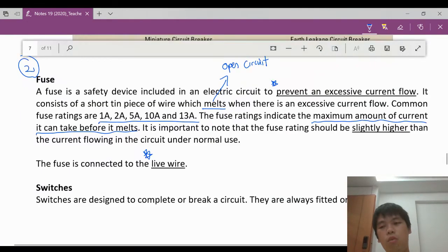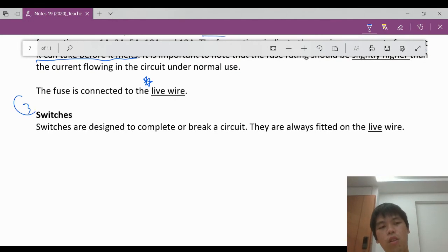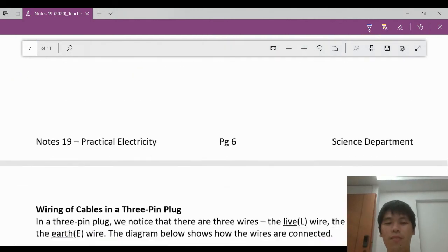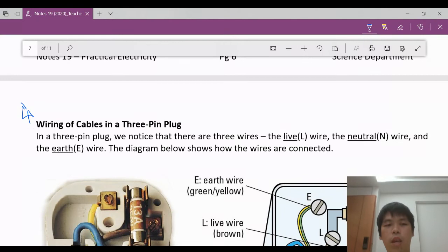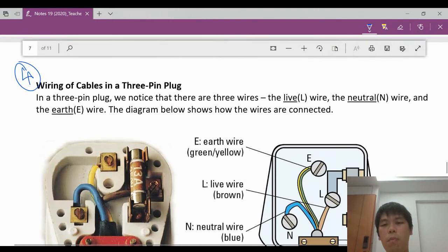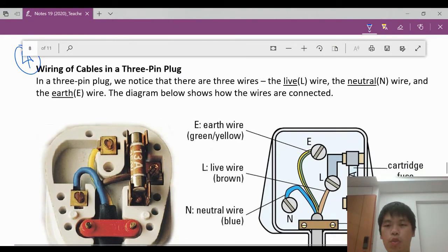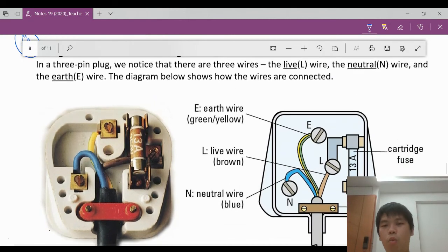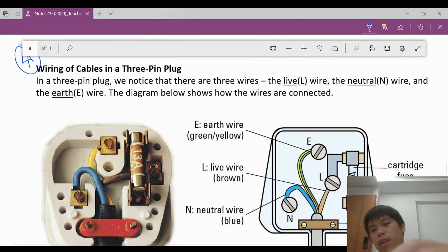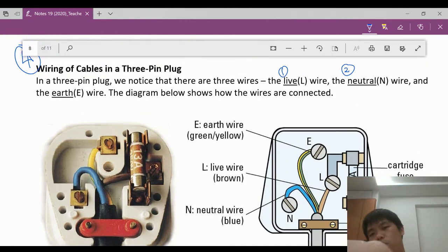So fuse is the second one. Let's look at the next one, which is on the switches. So switches are very clear-cut. If you want to off the electricity, switch it off and it's always fitted on the live wire. So just take note. Next, we have our wiring in the three-pin plug. Your three-pin plug has a setup that helps to protect your house device. What do you need to know? You need to know that there are three wires: live, neutral, and earth.